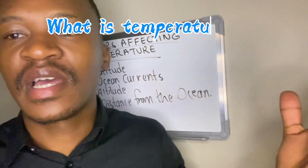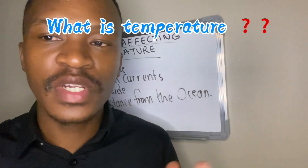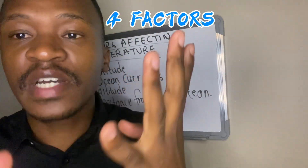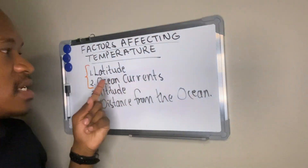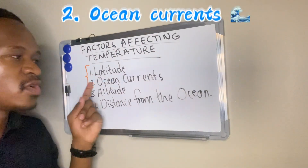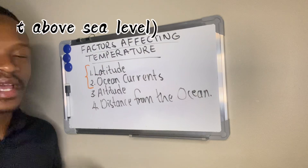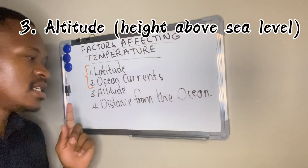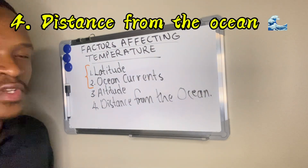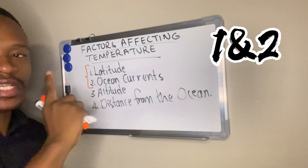What is temperature? Temperature simply refers to how hot or cold an area is. There are four factors which affect temperature: number one is latitude, number two ocean currents, number three altitude, and lastly distance from the ocean. In today's video, we are going to cover latitude and ocean currents.